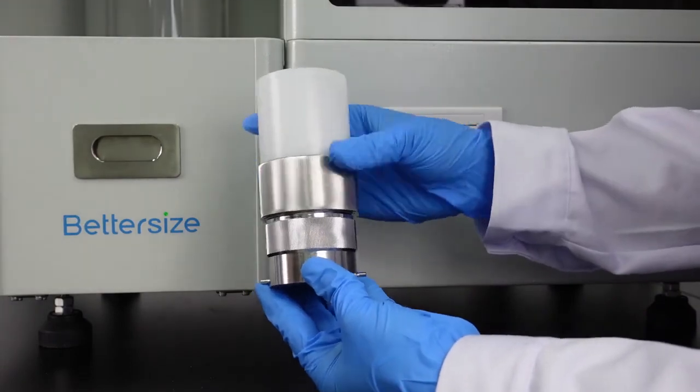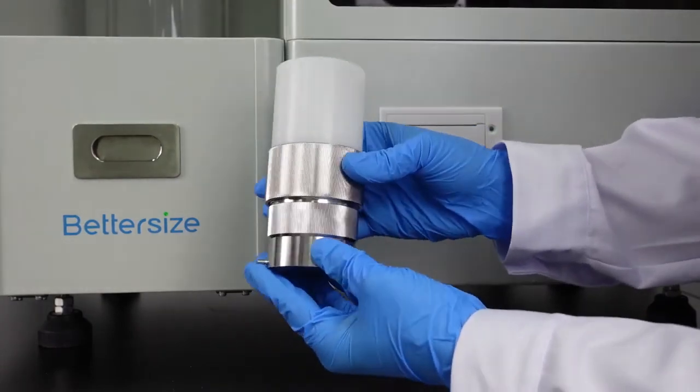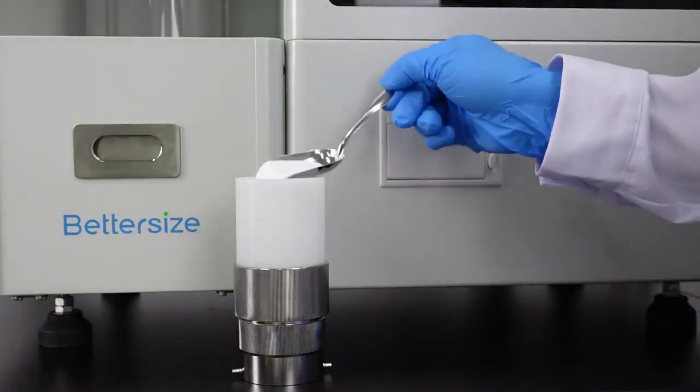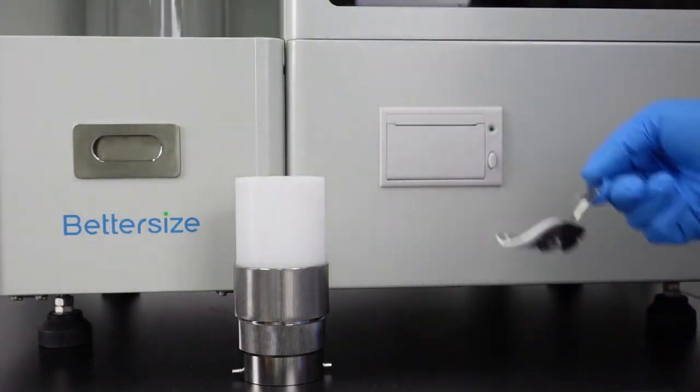Install the extension tube on a 100ml container. Add the sample to the cylinder. The amount of sample should be more than half the height of the extension tube.